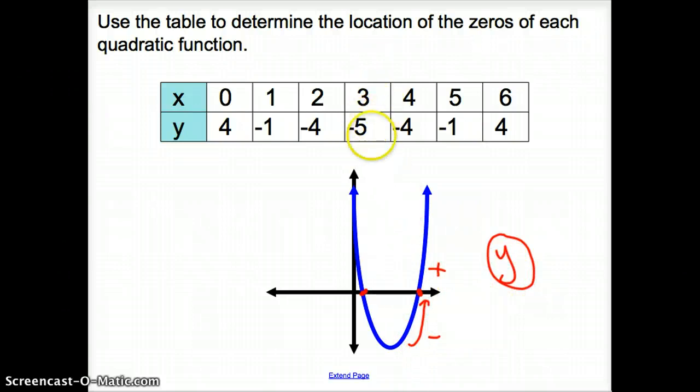If I start in the middle of my table and work out, here it goes from negative to positive in this section. But what are my x's? My x's are 5 to 6. So my solution would be between 5 and 6.